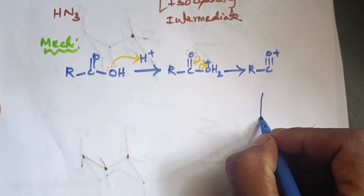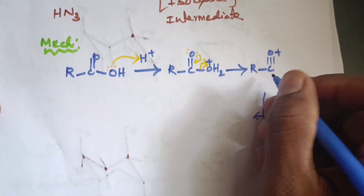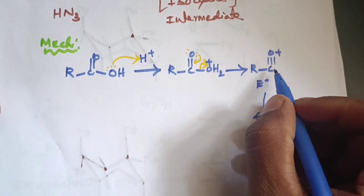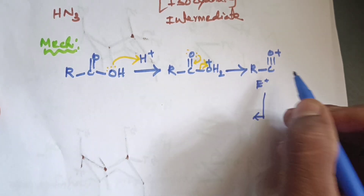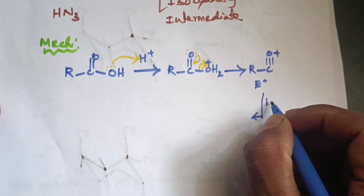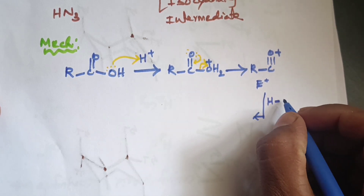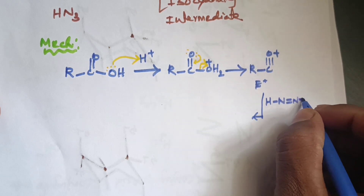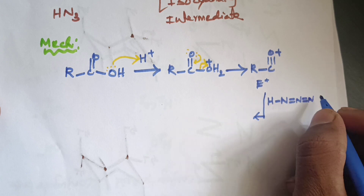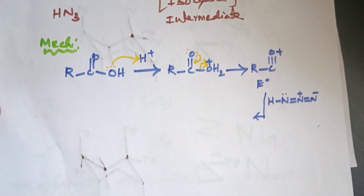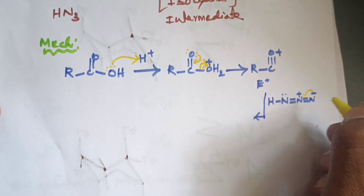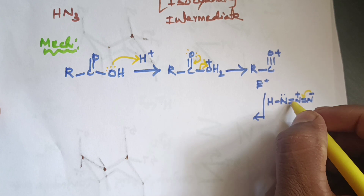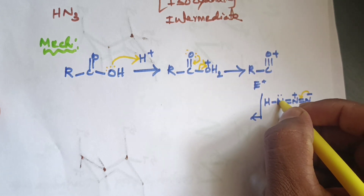Next step: this carbon is an electrophilic center. The nucleophile, HN3 (hydrazoic acid, N=N=N−), comes to attack this carbon. The nitrogen with a positive charge and the nitrogen with a lone pair — this nitrogen gets a negative charge, and the pi bond shifts to nitrogen.